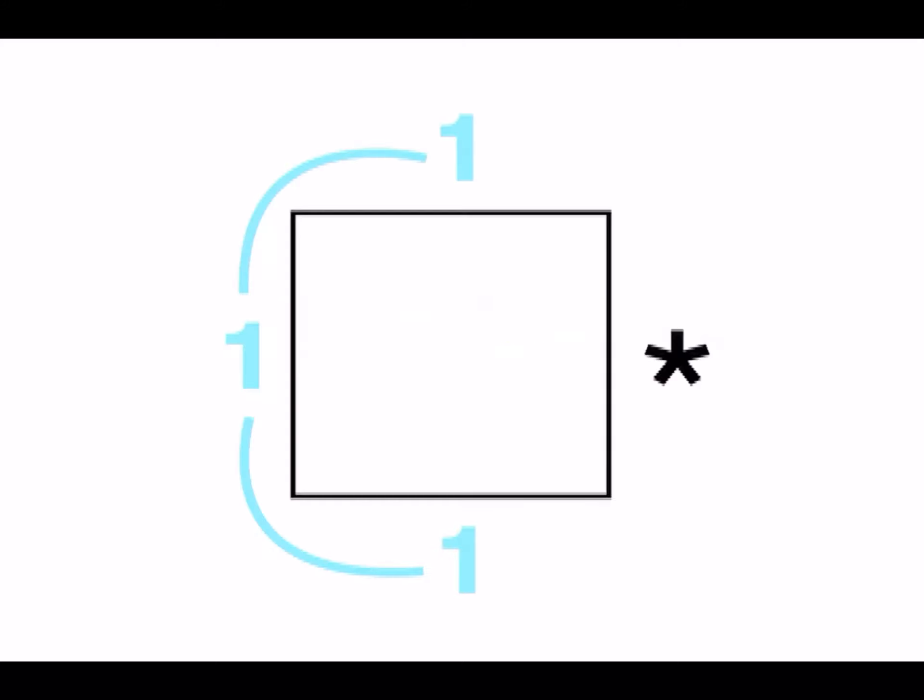We can also have notes that are longer than a single beat. Here you can see how we connect the same note going from beat to beat with a curved line. Let's see some examples. In this example, we play the note one blue over the first three beats, and a rest on the fourth.